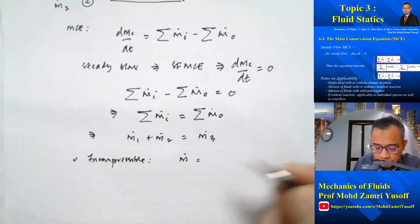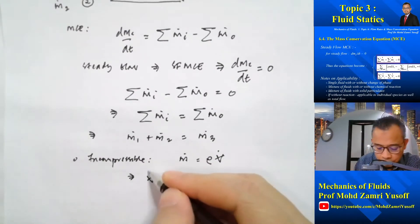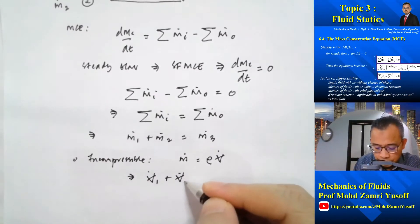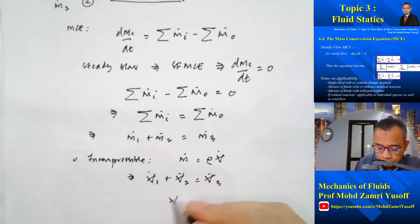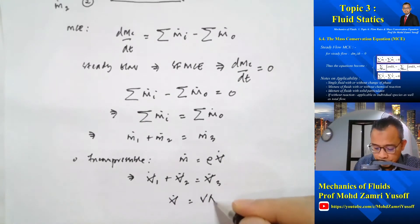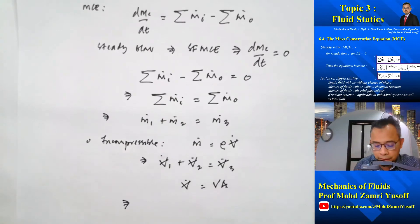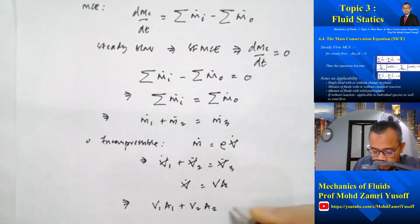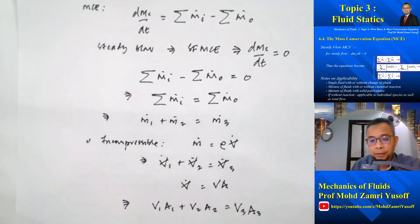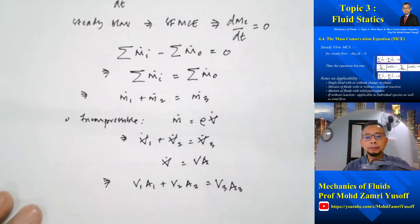If the flow is also incompressible, since m-dot equals rho times the volume flow rate, this implies the volume flow rate at one plus the volume flow rate at two must equal the volume flow rate at three. Since volume flow rate equals velocity multiplied by area, we can write V1·A1 plus V2·A2 equals V3·A3, relating the velocities and areas at stations one, two, and three.